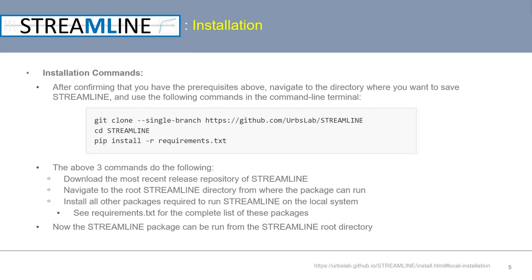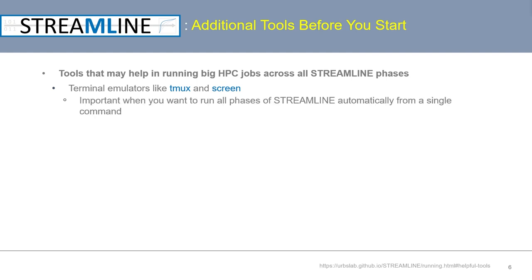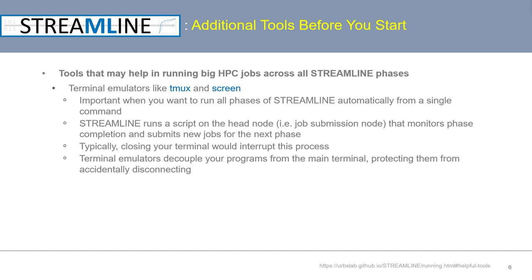Streamline can be run from inside the saved Streamline root directory. If you plan on using Streamline on an HPC, there are some additional tools we recommend. First, terminal emulators such as tmux and screen are important when you want to run all phases of Streamline automatically from a single command, because Streamline runs a script on the head node that monitors phase completion and submits new jobs phase to phase. If you close your terminal mid-run, this would interrupt the analysis. Terminal emulators decouple your programs from the main terminal, protecting them from accidental disconnection.